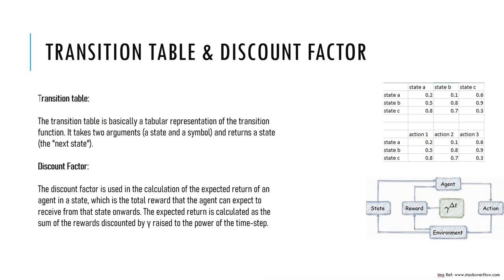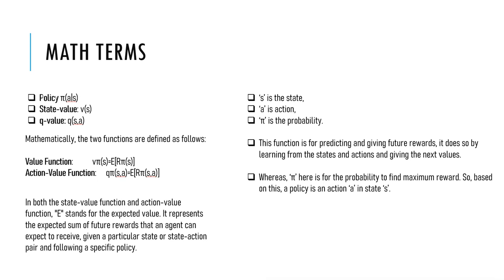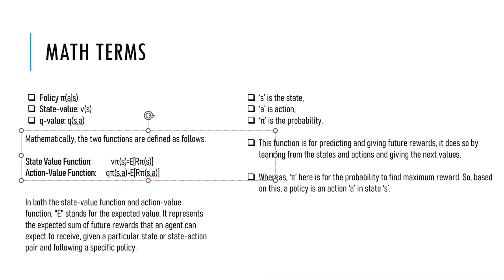Now let's understand some of the mathematical terms we will be using in further study and projects. First is policy, represented as π(a|s), where a is the action and s is the state. State value is represented as V(s), and Q-value is represented as Q(s,a), where Q is quality, s is the state, and a is the given action. Mathematically, two functions are defined: the state value function and the action value function.